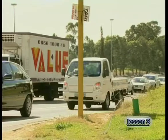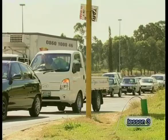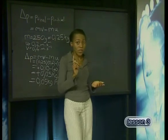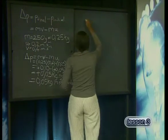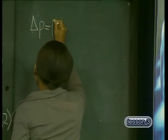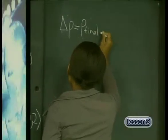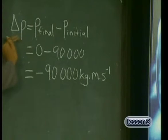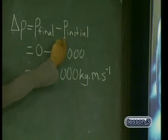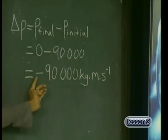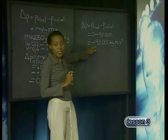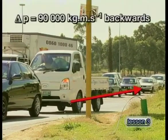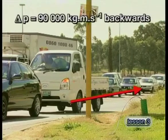Remember the truck on the highway we looked at in our previous lesson. Let's consider the change in momentum when the truck stops. The momentum of the truck changes from 90,000 kilogram meters per second to zero. The change in momentum is calculated as: the final momentum of the truck is zero, minus its initial momentum of 90,000 kilogram meters per second, giving a change in momentum of negative 90,000 kilogram meters per second. The negative sign tells us the change in momentum acts in the opposite direction to the original motion of the truck — it is in the same direction as the resultant force on the truck, opposing the truck's motion.